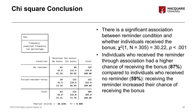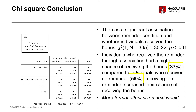If we want to interpret how big that effect is, measures of effect size are useful. One way of doing that is already represented in the conclusion — people in the forced reminder through association condition had an 87% chance of receiving the bonus, whereas people in the no reminder condition had a 59% chance. The difference between those two percentages is one measure of effect size, representing how big the effect of condition is on the likelihood of receiving the bonus. More formal measures of effect size for categorical data will be covered next week.